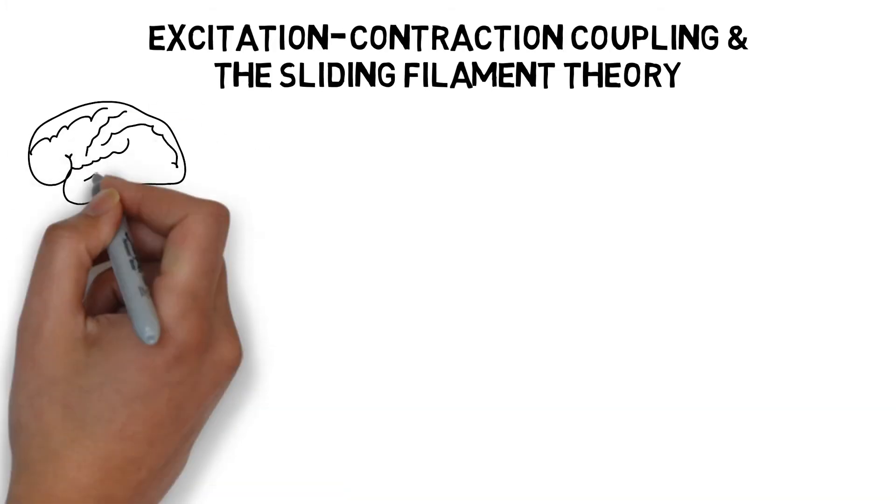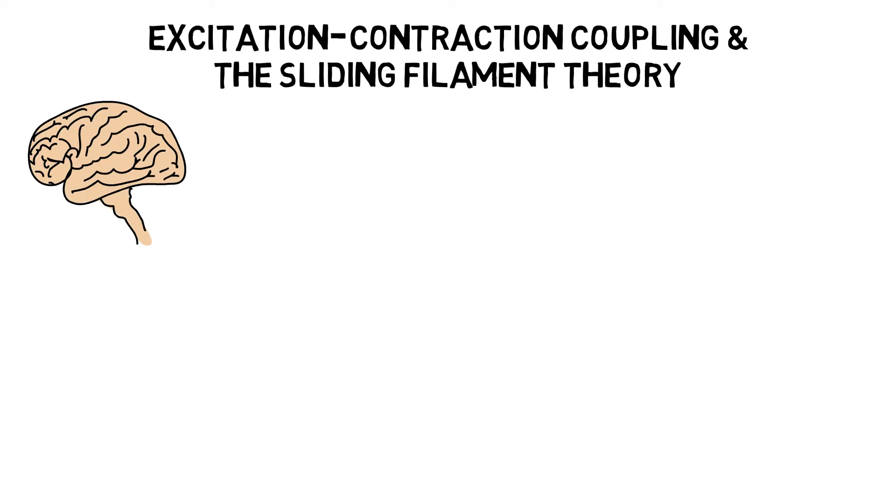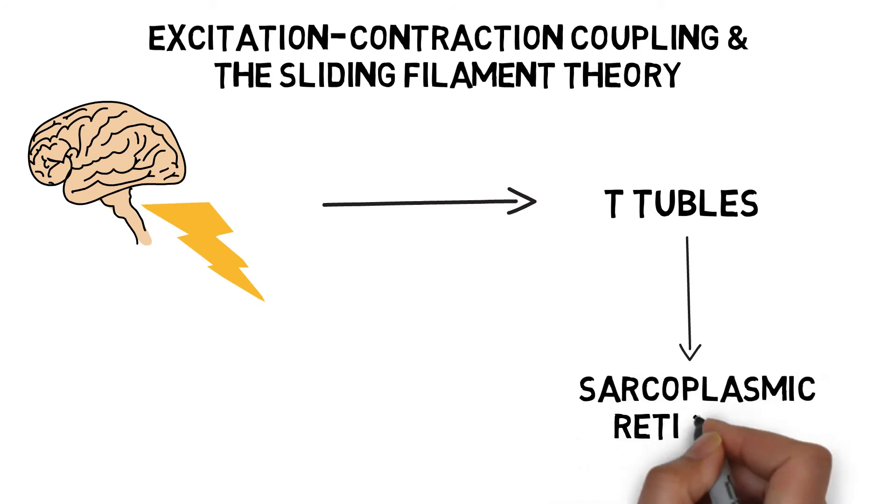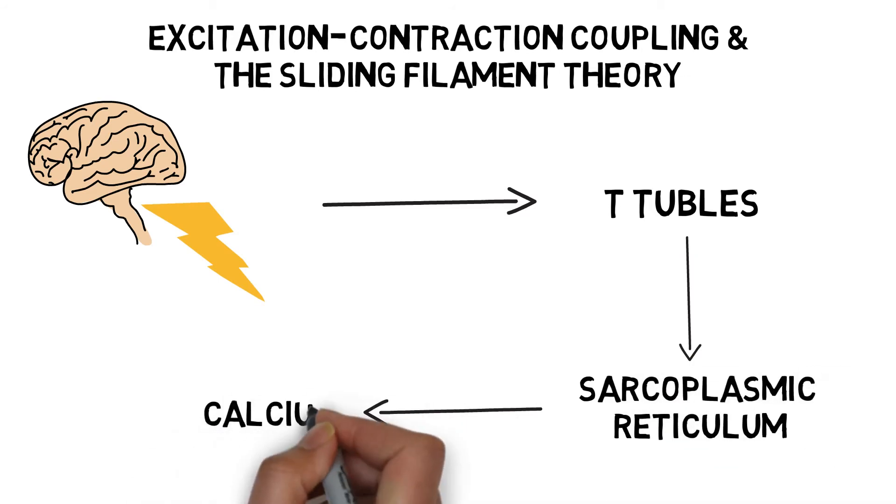Here are the key steps that occur leading up to a skeletal muscle contraction. A nerve impulse arrives from the brain, triggering a muscle action potential. The action potential travels down the T-tubules, which triggers the release of calcium from within the sarcoplasmic reticulum.